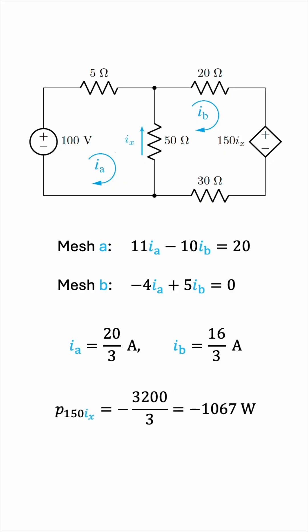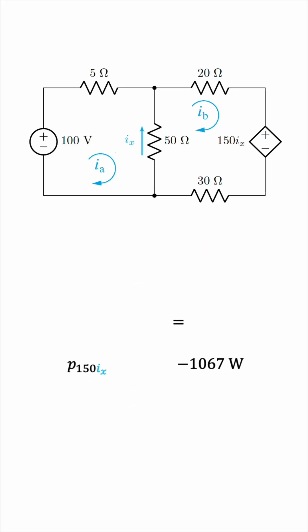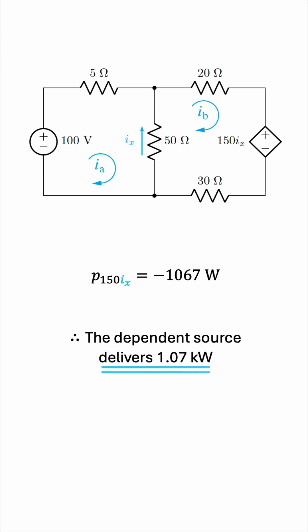It's negative as expected, because the problem is telling us that this source is delivering power to the network, not absorbing power. So, the conclusion is that the dependent source is delivering approximately 1 kilowatt of power to the circuit.